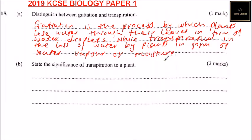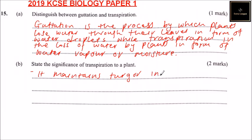That's the difference between guttation and transpiration. Part B states the significance of transpiration in a plant. One significance is it maintains turgor in plants. Turgor is the pressure exerted by fluid in a cell that presses the cell membrane against the cell wall.